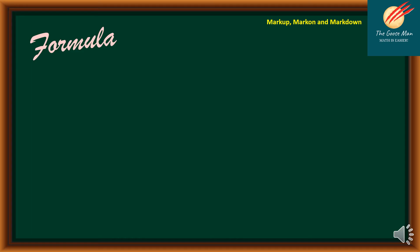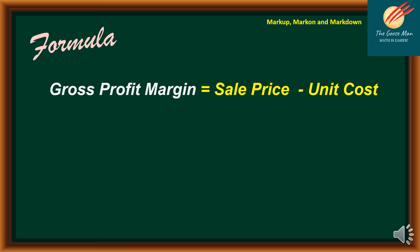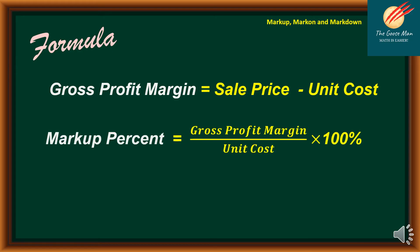While markup is the amount the retailer earns from the sale, there is another quantity that measures retail success: the gross profit margin. It is computed as gross profit margin = sale price minus unit cost. This margin indicates the strength of the retail business, and its relationship to markup is: markup percent = gross profit margin divided by unit cost times 100%. Markup is always greater than the gross profit margin, which often leads to the incorrect notion that a seller is earning more profit than they actually are.